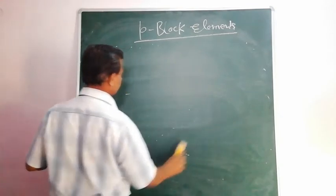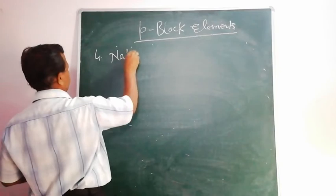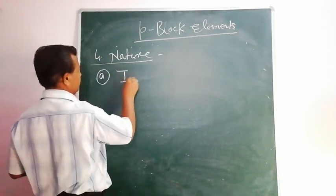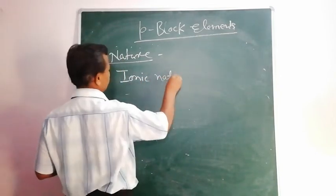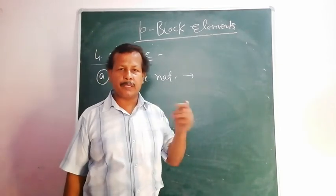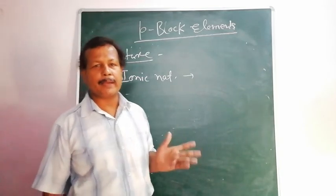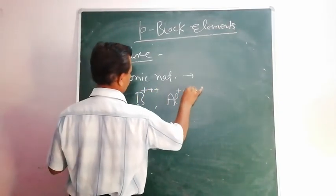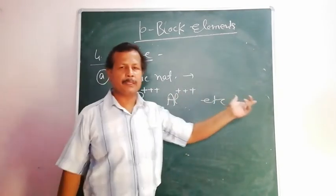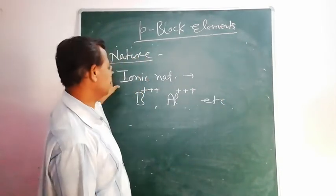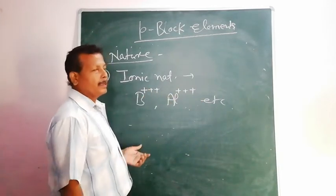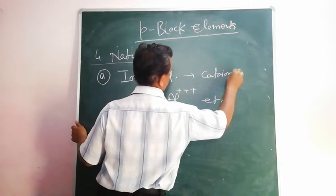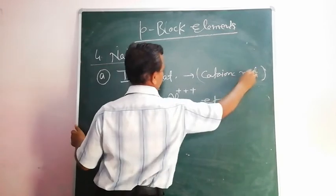Now, regarding the nature of these elements — first, ionic nature. In general, all these elements very easily release 3 electrons and form 3+ cations. Boron, Aluminium, Gallium, etc. all form +3 cations, so they are positive ions and show cationic nature.